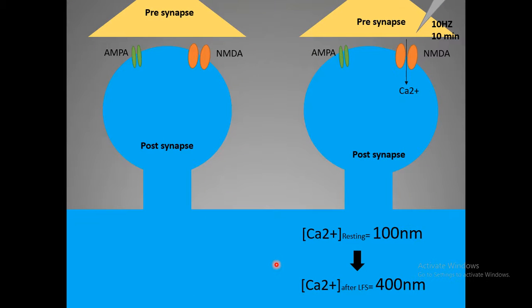What exactly happens when 10 Hertz for 10 minutes low frequency stimulus is given? The low frequency stimulus can raise the calcium level in the postsynaptic region from 100 nanomolar to 400 nanomolar. Unlike LTP, this is quite low, because in case of LTP the postsynaptic calcium elevation is tenfold, rising to about one micromolar.